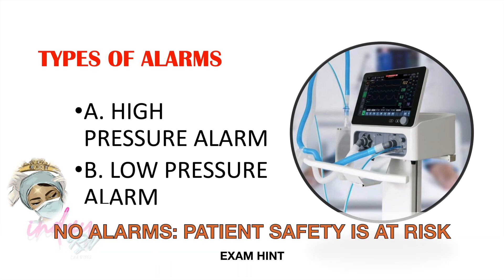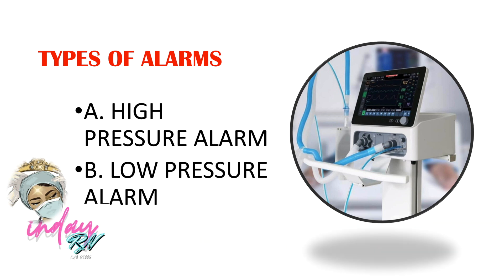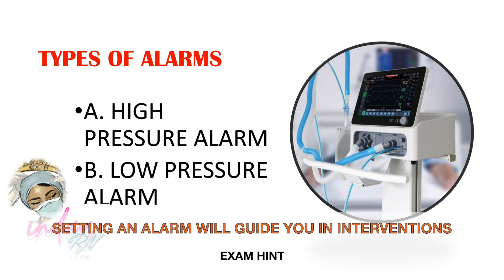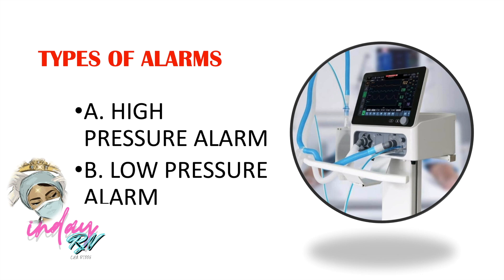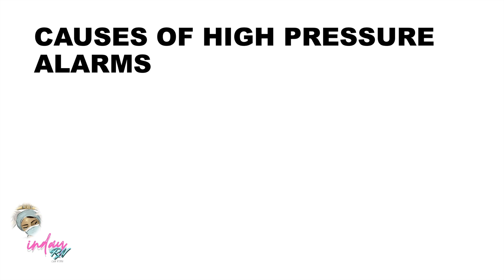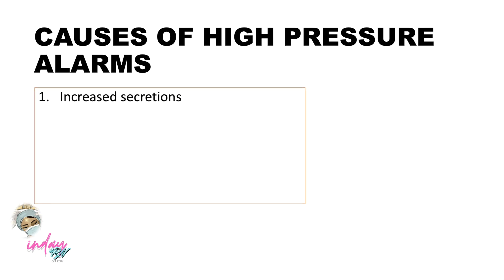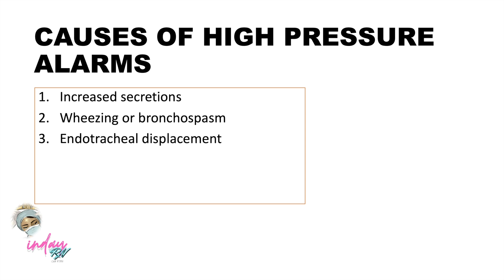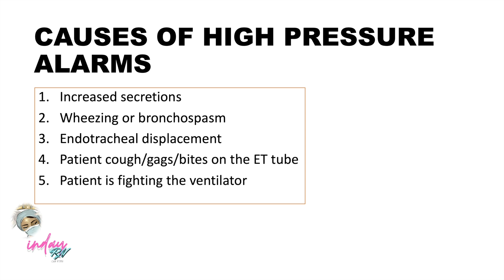Setting an alarm on the ventilator will help us do our tasks for our patients — they are our guides, so don't be annoyed by the beeping. For high pressure alarms, the causes include: number one, increased secretions; number two, wheezing or bronchospasm; number three, endotracheal displacement; the patient may cough, gag, or bite the ET tube; and lastly, the patient may be fighting with the mechanical ventilator.